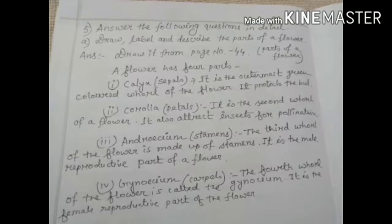Now from question number 5: Answer the following question in detail. Number A: Draw, label, and describe the parts of a flower. So drawing is on page number 44 in your book - Parts of a flower given. You draw it. Next part.